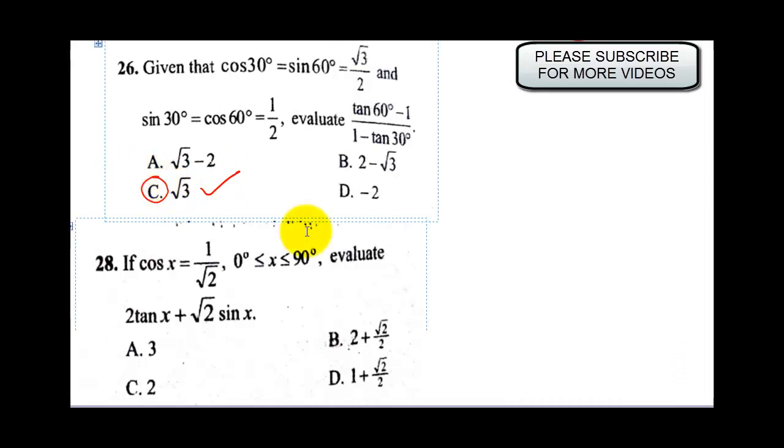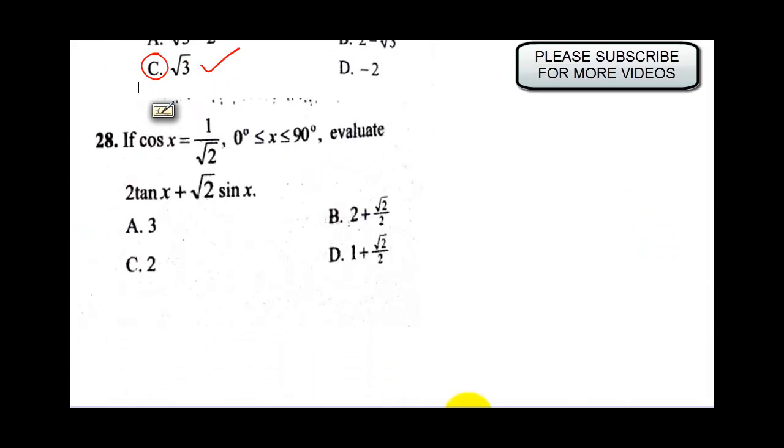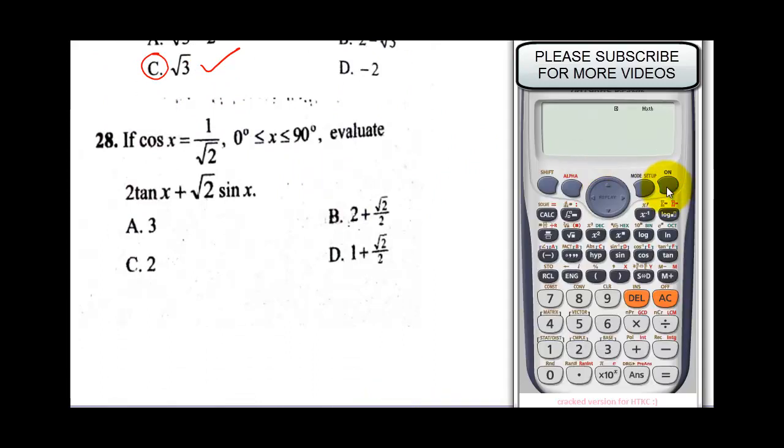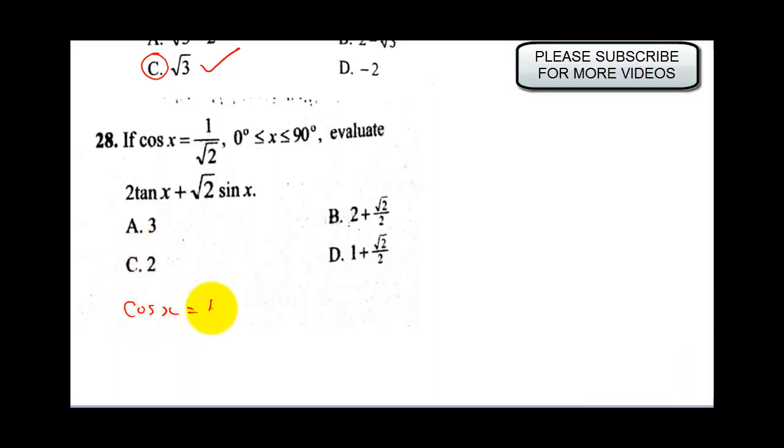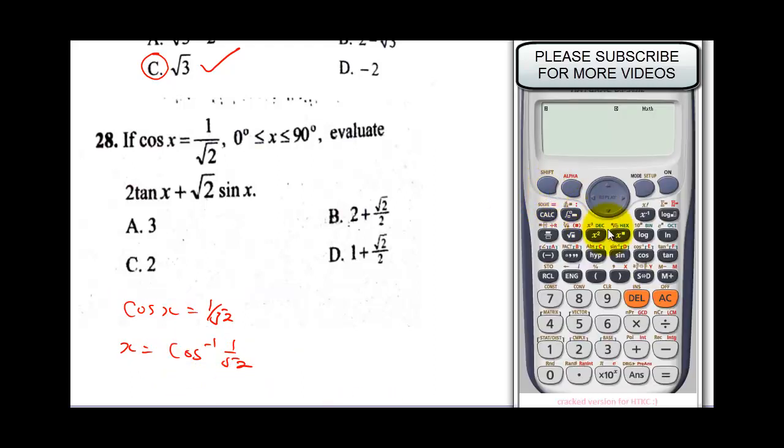This is exactly how you could use it to solve several questions. Let's attempt the last one. It says: if cos x equals 1 over root 2, evaluate the expression. If cos x equals 1 over root 2, that means x is going to be cos inverse of 1 over root 2. Let's perform this: shift cos inverse of 1 over root 2, close brackets. This is 45 degrees, so our x is 45.